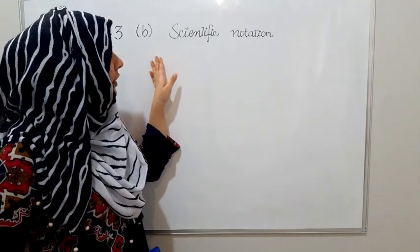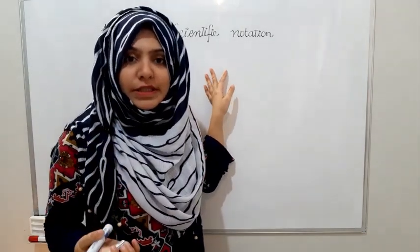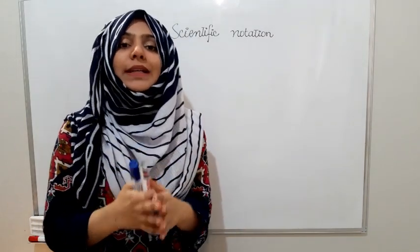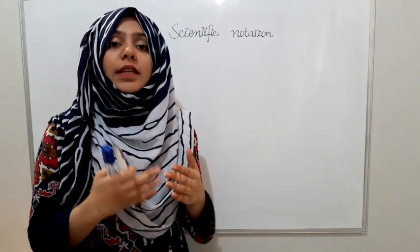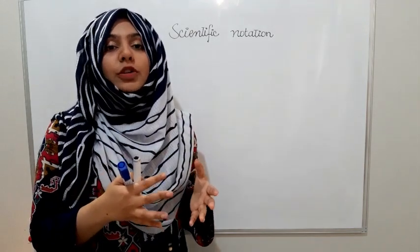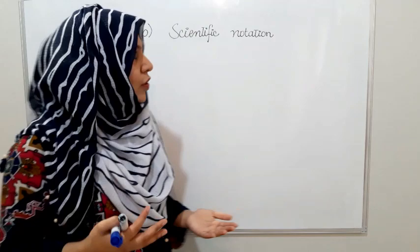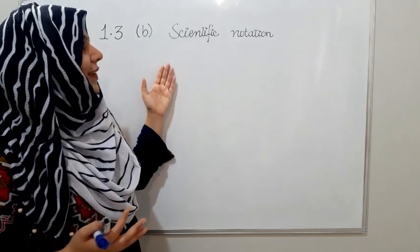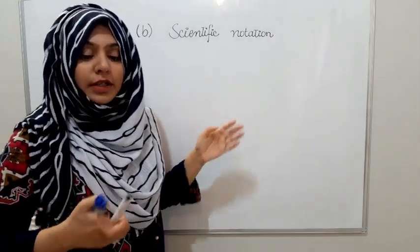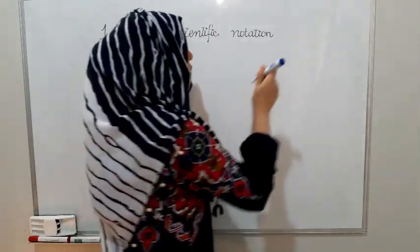Assalamualaikum. We will discuss part 1.3, in which we will discuss scientific notation. In the first part, we discussed the international system of units — what kinds of units exist and how they are categorized. In this topic, we are going to discuss scientific notation. This is a very important short question, and we will also ask MCQs on this.